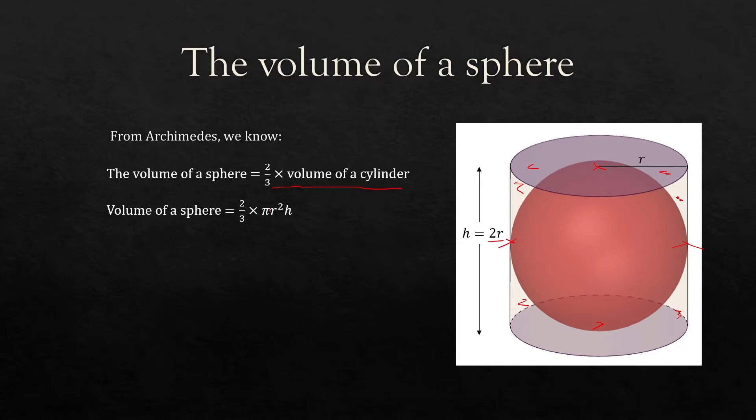So the volume of a sphere is two thirds times the volume of a cylinder and this is your formula for the volume of the cylinder: the base area which is pi r squared times the height, and you would have learned that in grade 8.